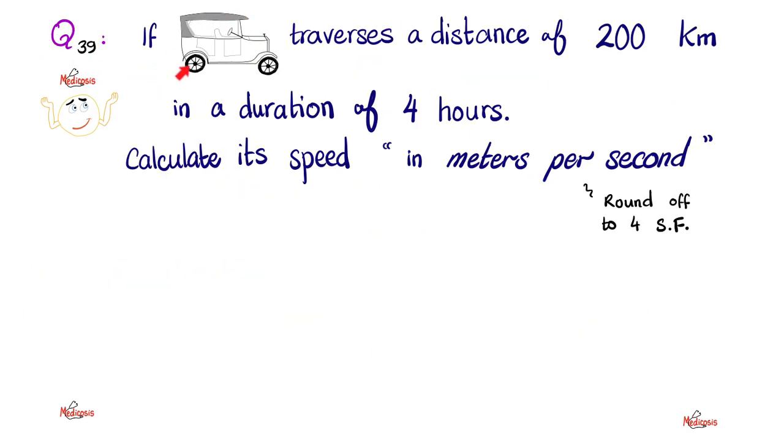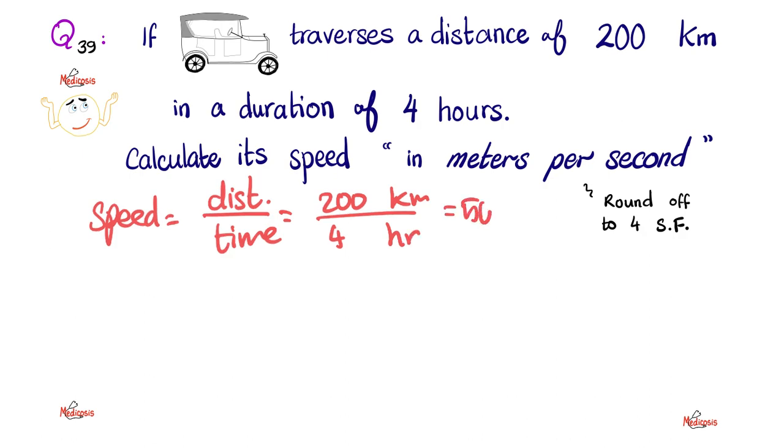Yet another question. If this car, which is very old school, traverses, another old school word, a distance of 200 kilometers in a duration of 4 hours, please calculate its speed in meters per second and then round off to 4 significant figures. Please pause and try to answer this yourself. Let's go. I have a speed, which equals distance over time. What was the distance here? The distance was 200 kilometers. And what was the time? It was 4 hours. Do the simple math and you get 50 kilometers per hour.